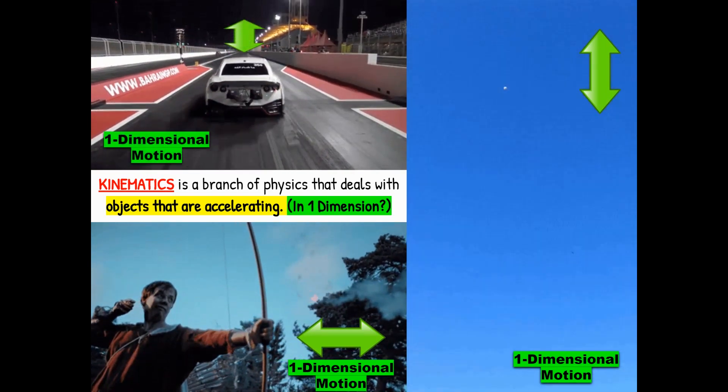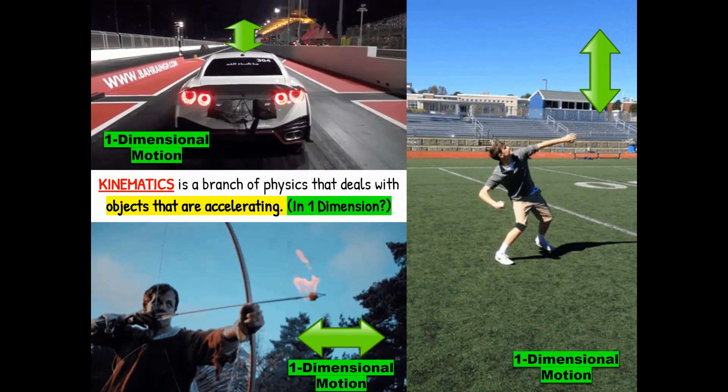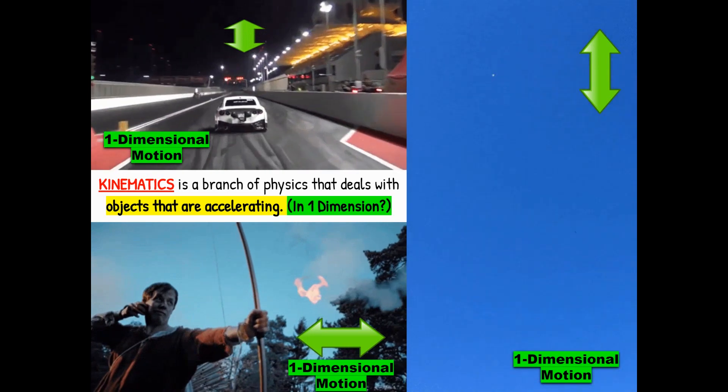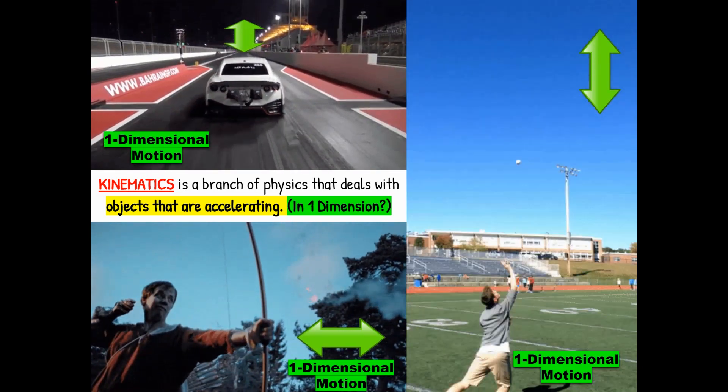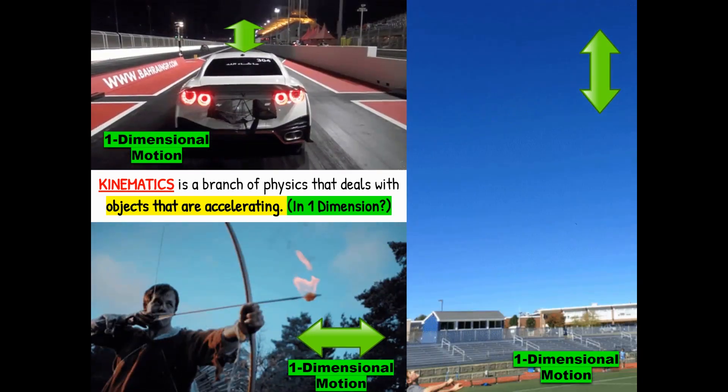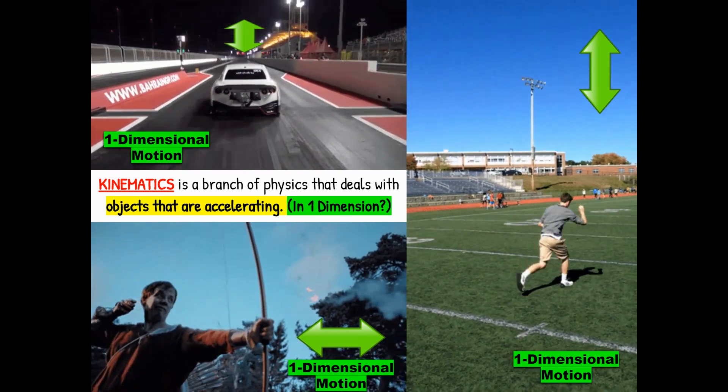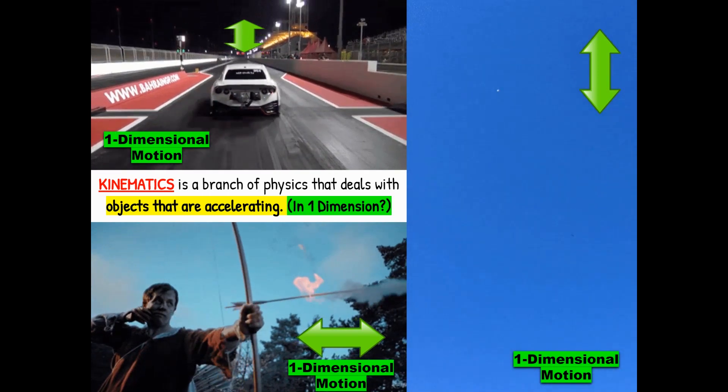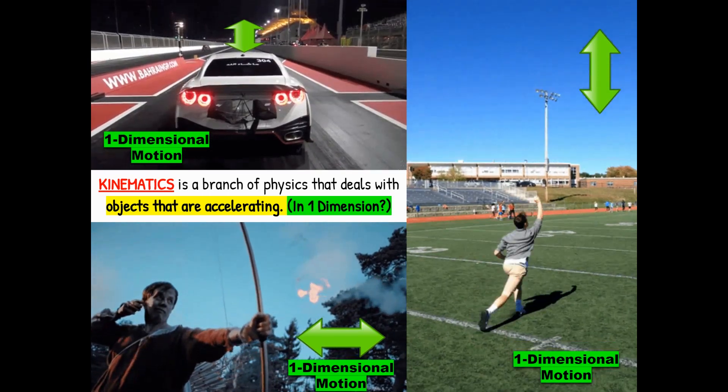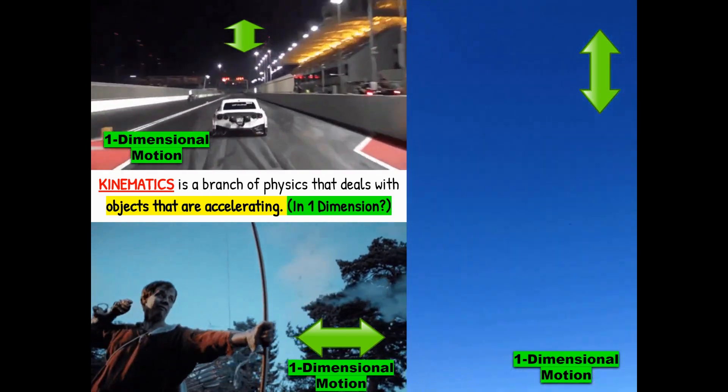And then finally in the top left-hand corner, there's a race car speeding off forward into the distance, and forward and backwards are the only important directions in this case. So all three of these are different types of one-dimensional motion, and that's what we're going to be thinking about in class primarily when we talk about kinematics. You can get into two-dimensional kinematics and even three-dimensional kinematics, but that's a little more advanced than what we need to talk about today.